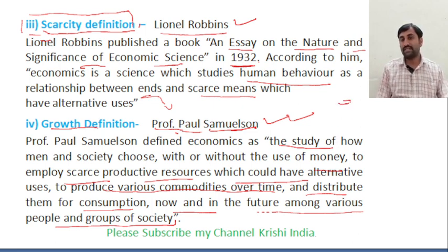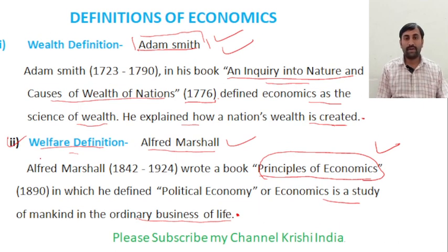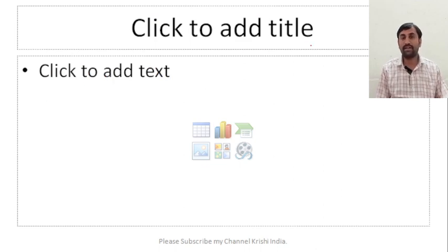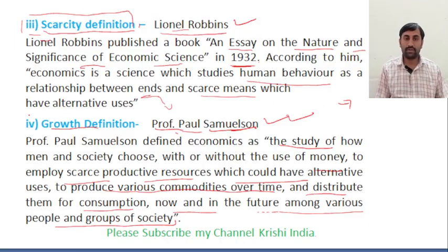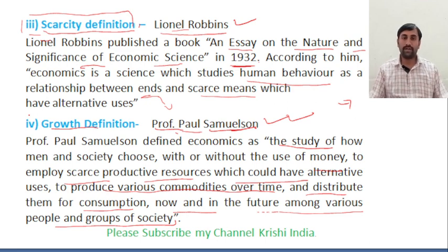So to summarize: the wealth definition is given by Adam Smith, the welfare definition by Alfred Marshall, the scarcity definition by Lionel Robbins, and the growth definition by Paul Samuelson. These are the most important definitions of economics. Thank you very much for watching this lecture.